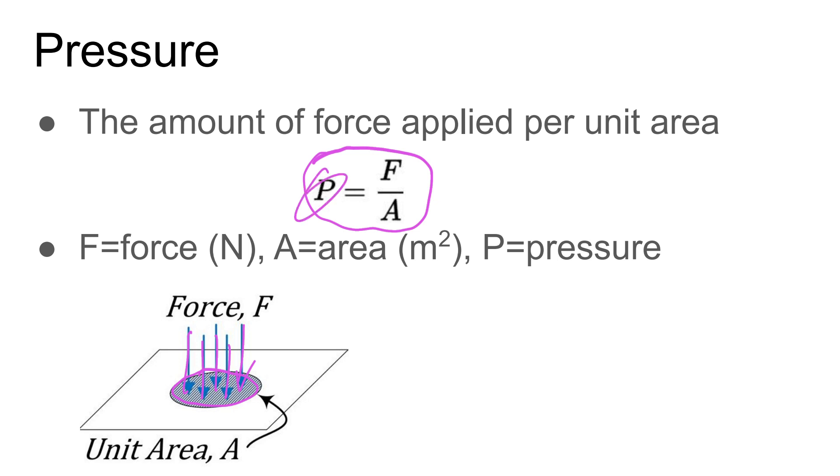So the amount of force in newtons over the given area in meters squared, that's going to give us our pressure. So our units for pressure are going to be newtons per meter squared. This gets renamed as the Pascal or Pa.